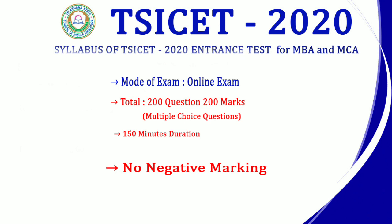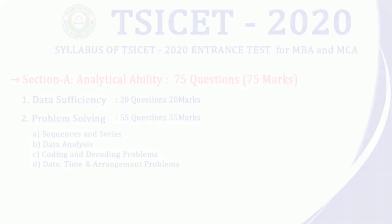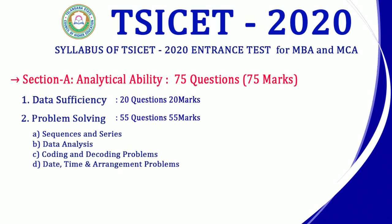The duration is 150 minutes, and there is negative marking. The sections are: Section A, Section B, Section C. Section A is Analytical Ability — 75 questions and 75 marks. Data sufficiency: 20 questions, 20 marks. Problem solving: 55 questions, 55 marks. Problem solving sub-topics include sequence and series, data analysis, coding and decoding, and date, time and arrangement problems — these four topics.